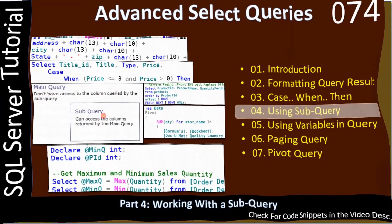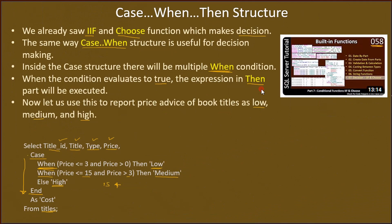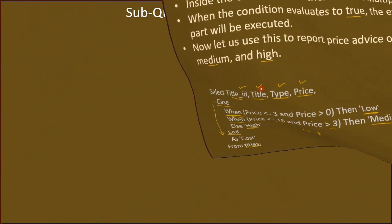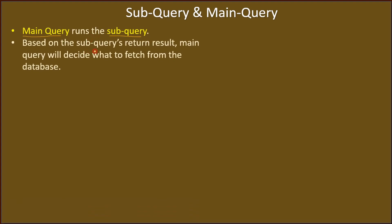When we talk about a subquery, there are two parts: one is the main query. The main query actually runs the subquery, and based on whatever the subquery returns, the main query will decide what to fetch from the database — or what to do based on the subquery's return result.